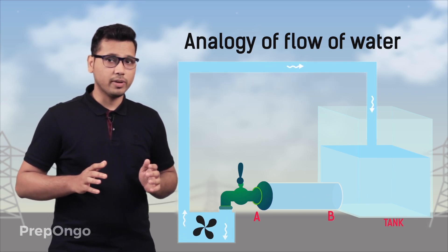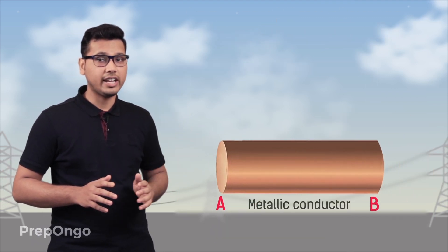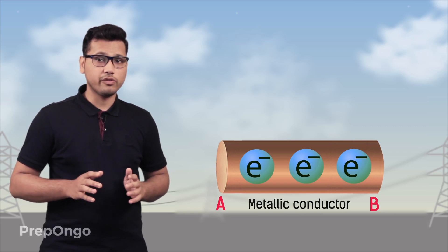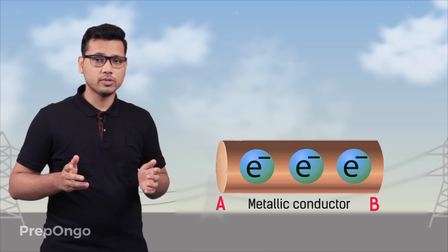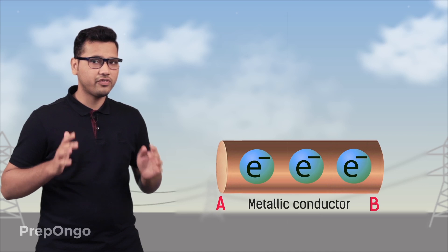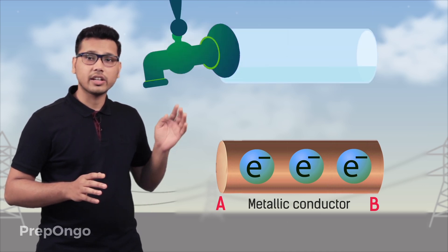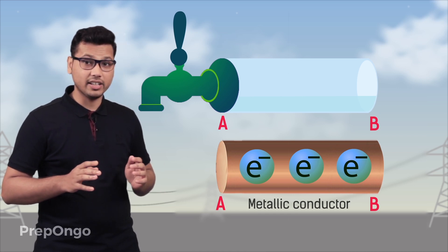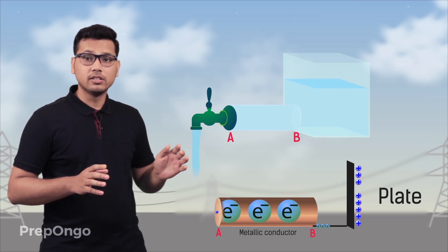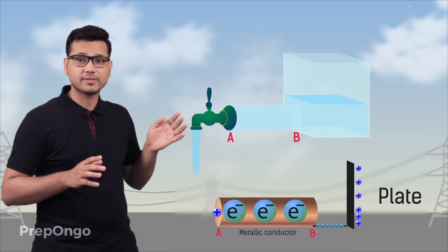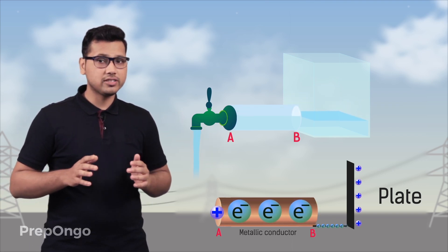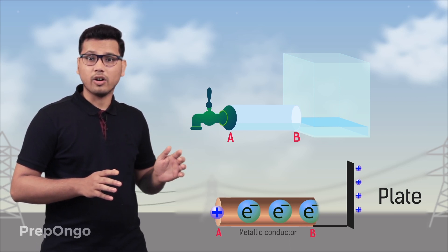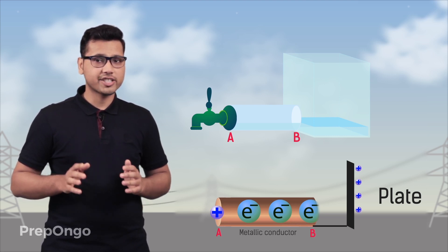Now let us imagine the same scenario, but instead of a horizontal tube we take a conductor. In the conductor we can see that there are electrons which are free to move. But will the electrons move? No — it's the same case as with the water. The charges will not flow until there is a pressure difference. So to create that, we attach a positively charged plate at end B of the conductor. As we attach this plate, the electrons will start moving towards it. But their flow will stop when a deficiency is created at point A, so after some time the flow of electrons will also stop.